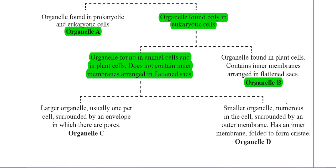If we look at organelle B, it's telling you now it's only found in plant cells and it has membranes, inner membranes arranged in flattened sacs. That to me would suggest now it's talking about the chloroplast, because the inner membranes of the chloroplast are called thylakoids and they often stack on top of each other, which gives the structure called a granum.